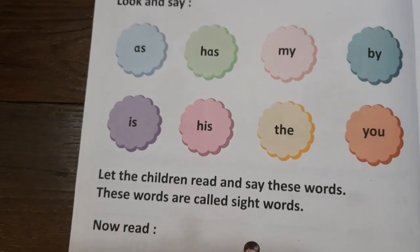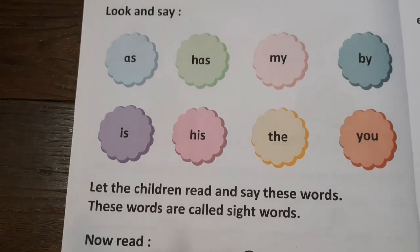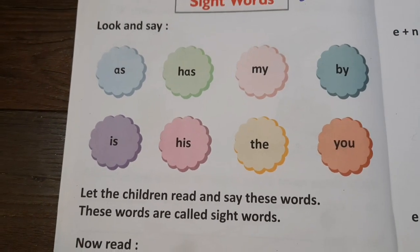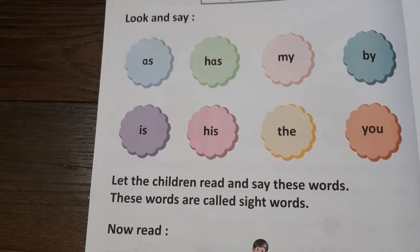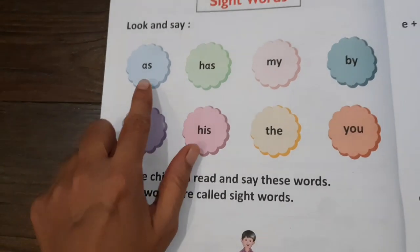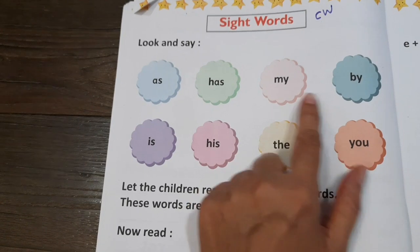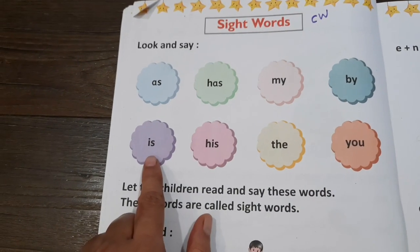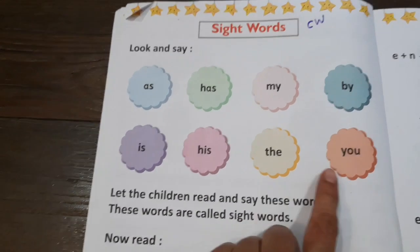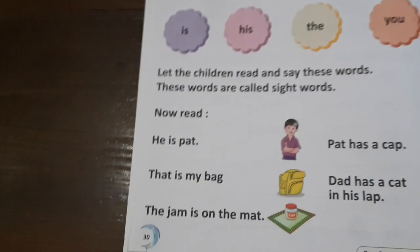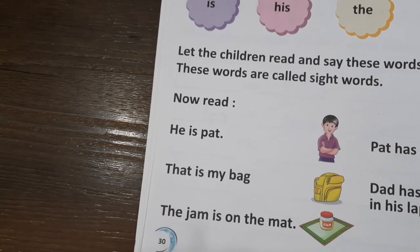So children, these are the eight sight words which we have in our phonic reader. There are many more sight words. Let's read these words and say them once again: as, has, my, by, is, his, the, you.